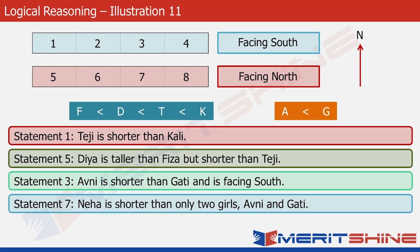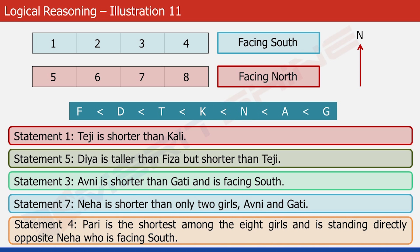Statement seven tells us that Neha is shorter than only two girls — Avni and Gatti. Since Avni and Gatti are already there, it becomes very obvious that Gatti is the tallest girl, then comes Avni, and then comes Neha. So we can connect the two blocks: G > A > N, and these three are the tallest. Statement four tells us that Pari is the shortest among the eight girls. We just need to put Pari at the leftmost part of this column. This completes the order of heights: P < F < D < T < K, and G > A > N > K. So we are done with the first part.